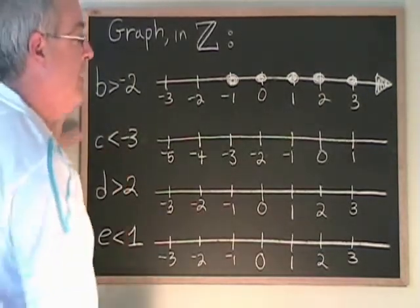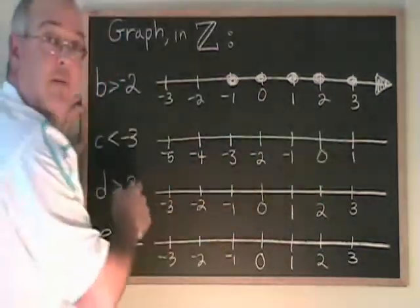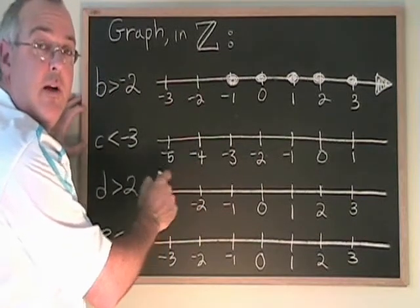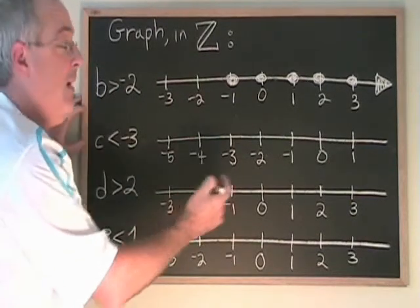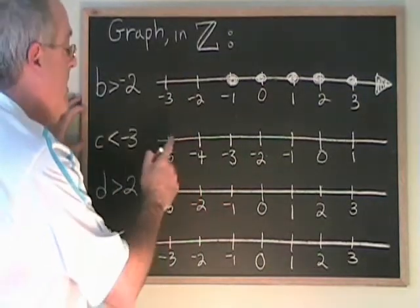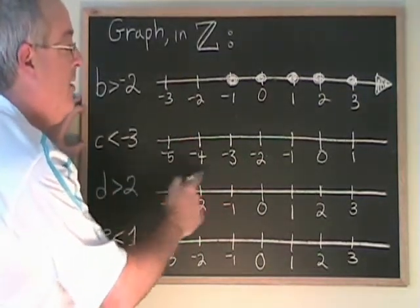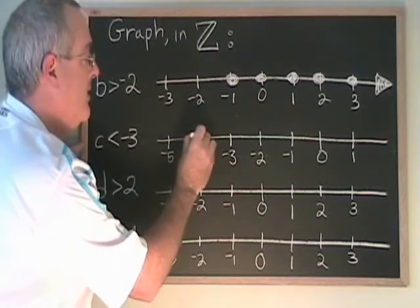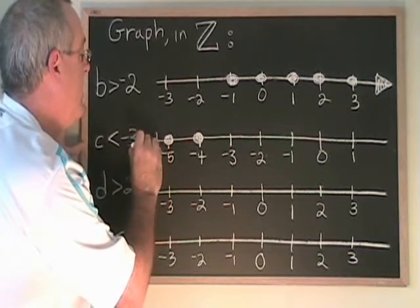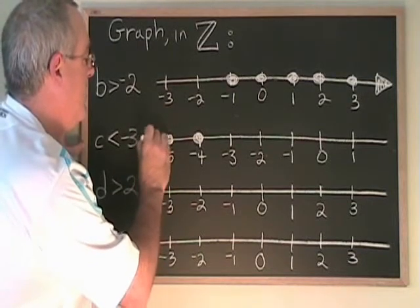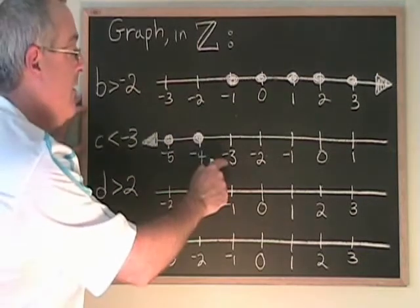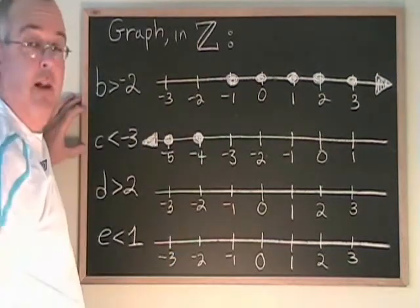C less than negative 3. I've made my number line a little differently here because I need some numbers like negative 4 and negative 5 that are further to the left. The numbers less than negative 3 are all over here. Negative 4 is less than negative 3. Negative 5 is less than negative 3, and on and on in the negative direction. Negative 3 is not part of the answer because it is not less than itself.